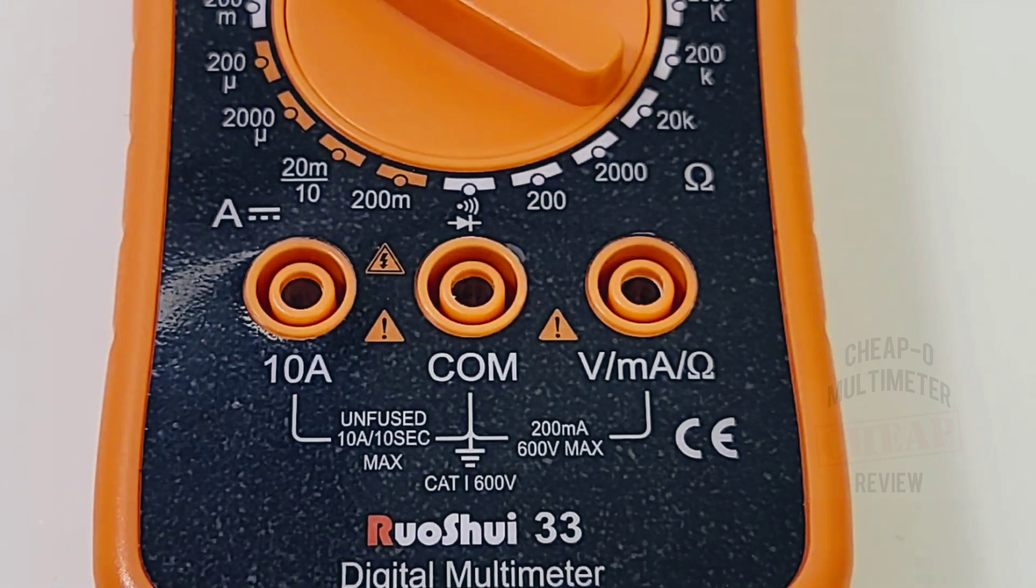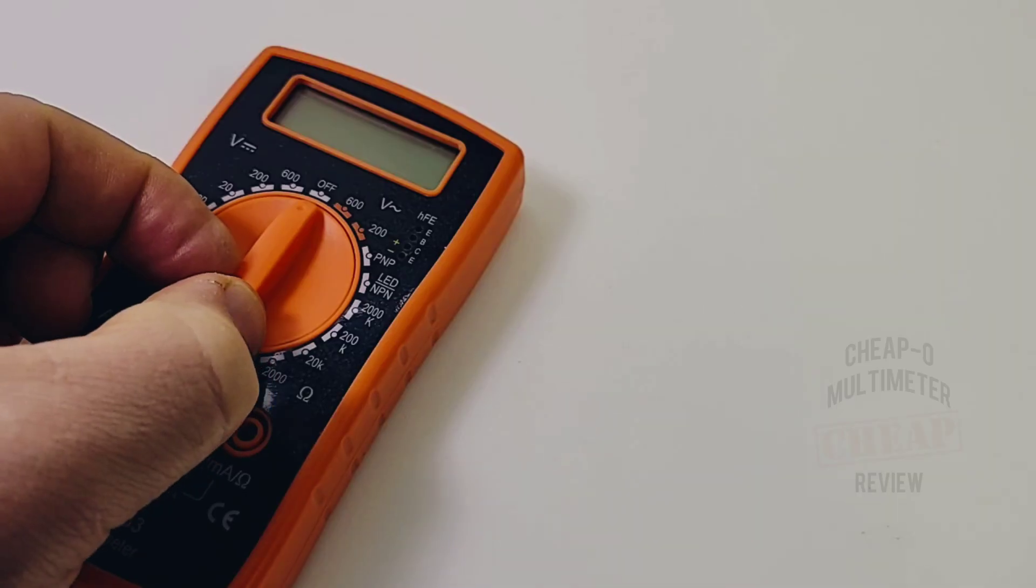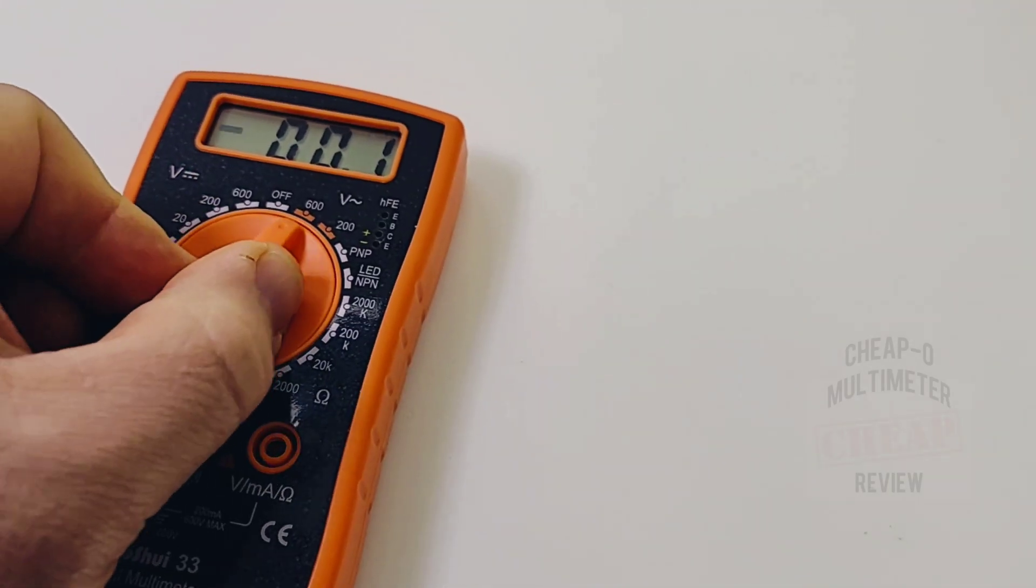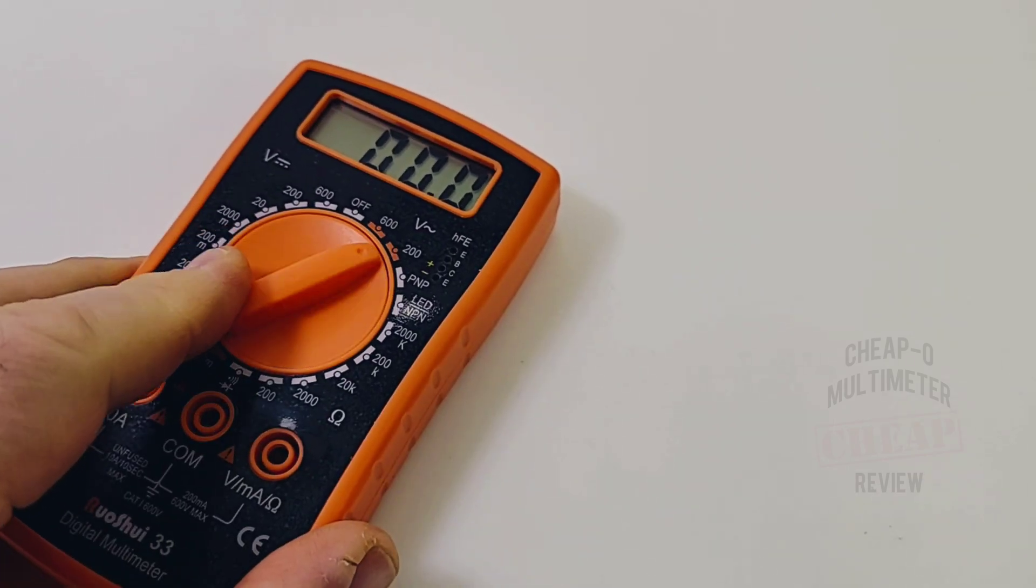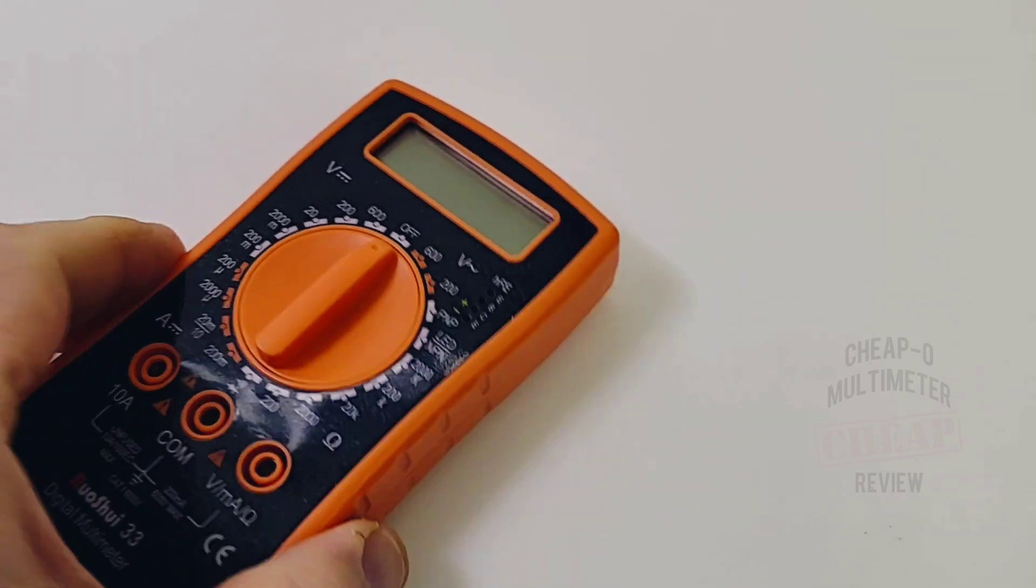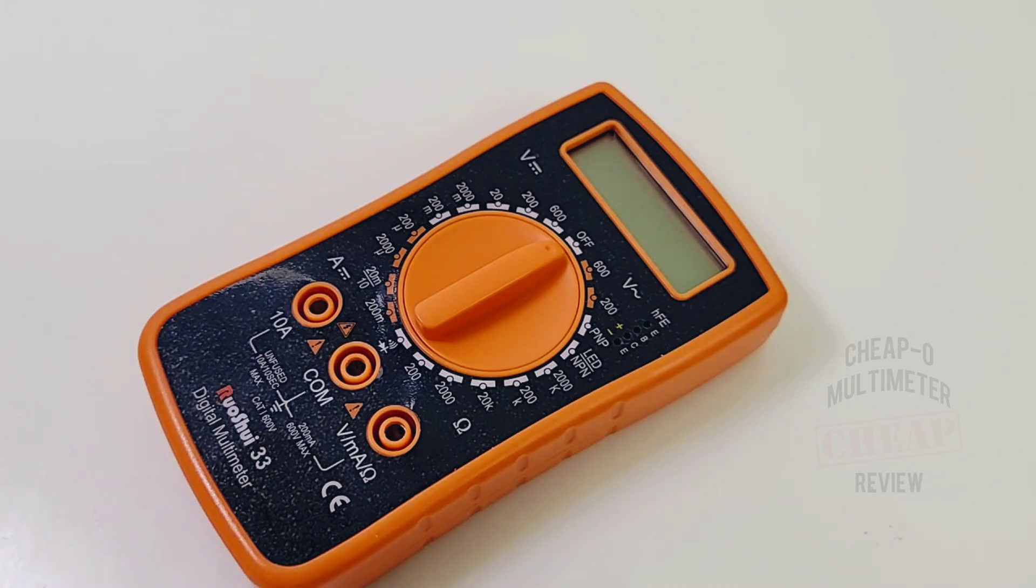That range selector switch isn't half bad. Has a good clackity-clack clickety-click. Will not get stuck between ranges and you can one-hand it if you need to. Not too shabby for a cheapo.